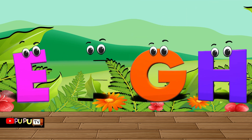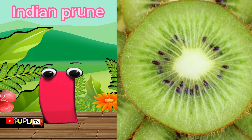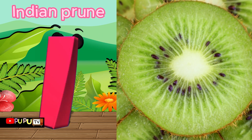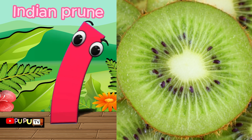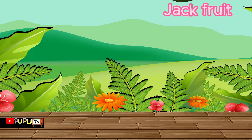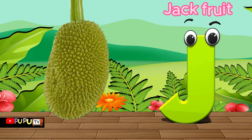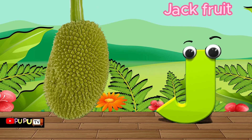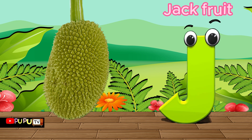I is for Indian prune, Indian prune. J is for jackfruit, j-j-jackfruit.